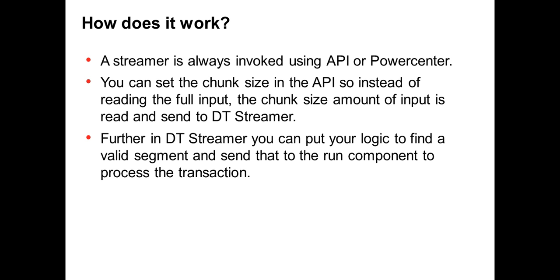When you invoke a streamer project using any of the API, you have the option to set the chunk size of the data. When you mention the chunk size in the API, instead of reading the complete input file, the API will read only the chunk size amount of data from the input file and load it into memory, which can then be read by the streamer project. So we are not loading the complete input file, but only the chunk size — you can read any amount of data.